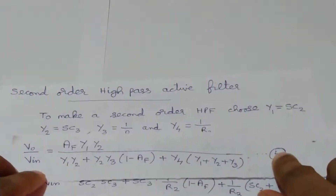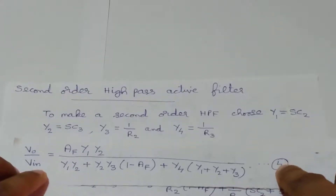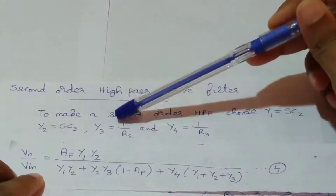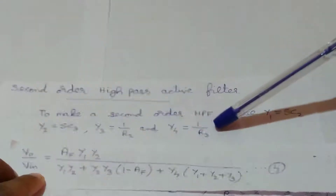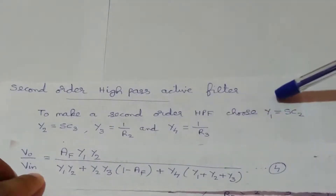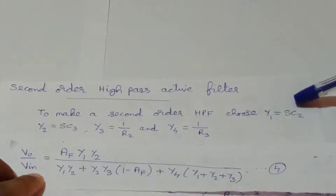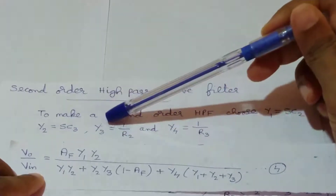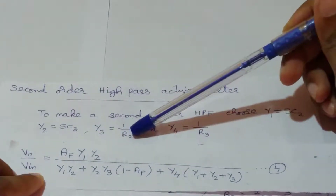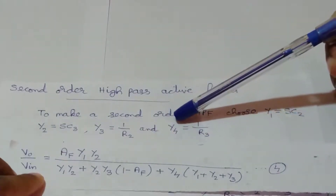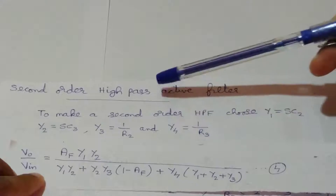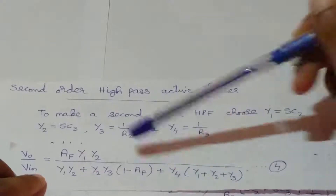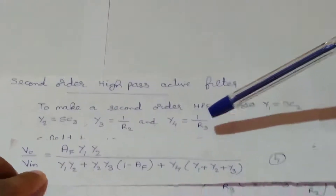To obtain the second-order high-pass Butterworth filter, substitute Y1 = sC2, Y2 = sC3, Y3 = 1/R2, and Y4 = 1/R3. In the high-pass circuit, capacitor C2 is placed in position Y1, capacitor C3 in position Y2, resistor R2 in position Y3, and resistor R3 in position Y4.